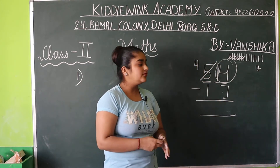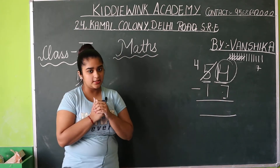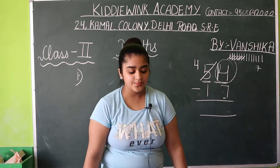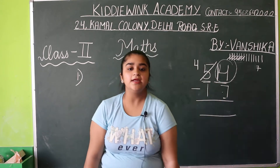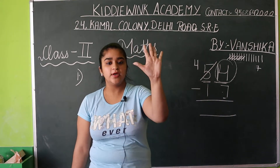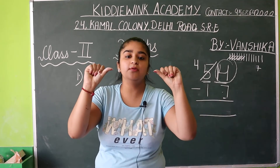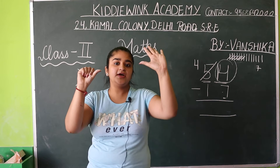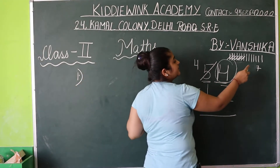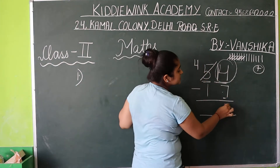Ab hum ek baar finger method se bhi karenge. Finger method se kya ho sakta bachy? 14 fingers hum ek saath nahi ho sakti. But ye ho sakta hai ki hum 7 ke baad 14 tab count karenge. 7 ke baad kya se count karenge? 8, 9, 10, 11, 12, 13, 14. Kitni fingers hain bachy ye? 7 — 1, 2, 3, 4, 5, 6, 7. Toh bachy, chaahe aap is method se karo, chaahe aap is method se karo, answer will be same. Answer aapka same hi aayega. That is 7.